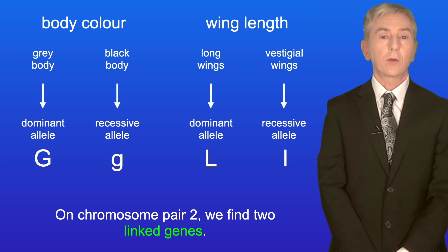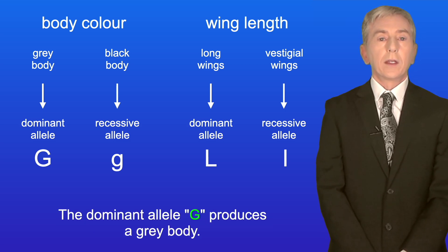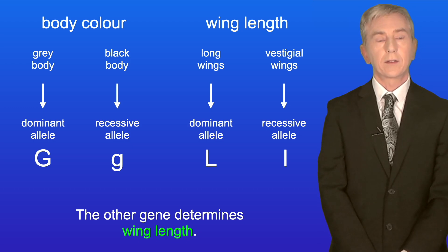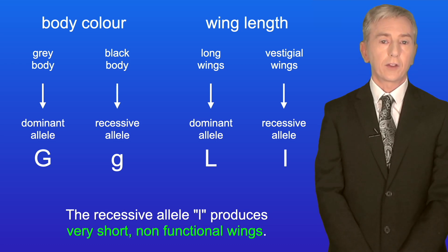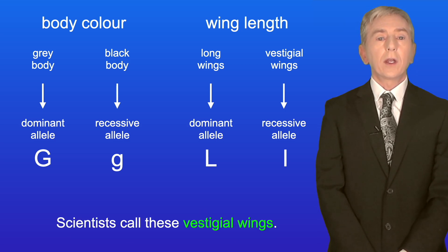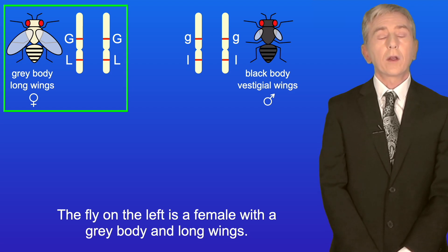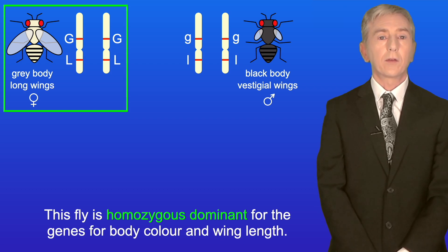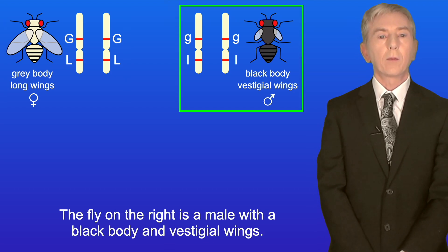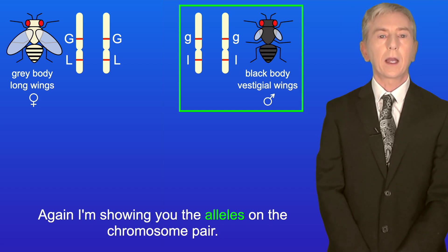On chromosome pair 2 we find two linked genes. One gene determines body colour: the dominant allele G produces a grey body and the recessive allele g produces a black body. The other gene determines wing length: the dominant allele L produces long wings and the recessive allele l produces very short non-functional wings, called vestigial wings. The female fly on the left has a grey body and long wings and is homozygous dominant for both genes. The male fly on the right has a black body and vestigial wings and is homozygous recessive for both genes.